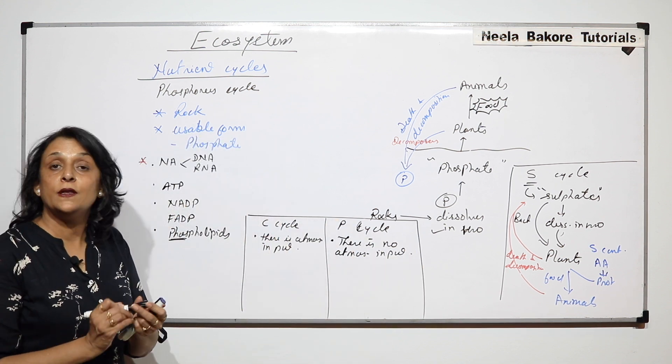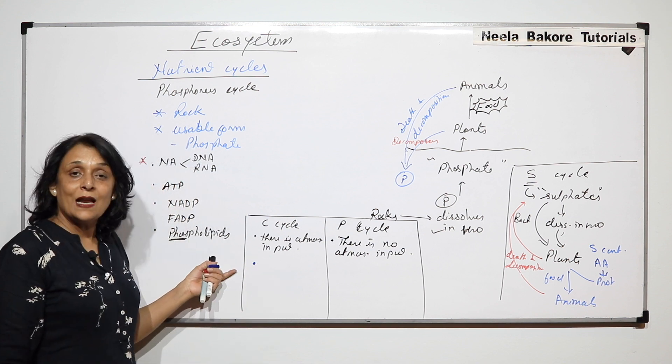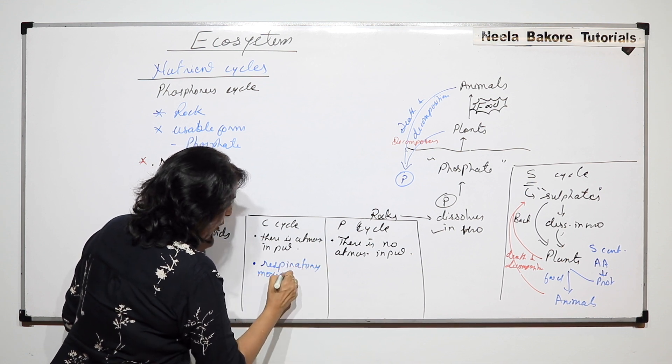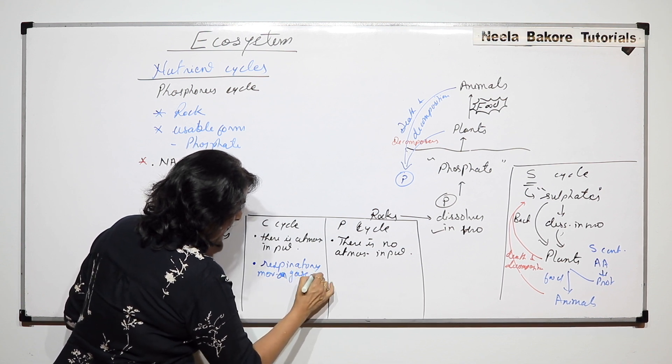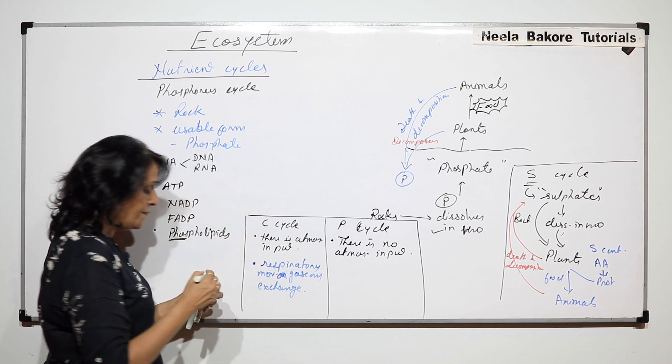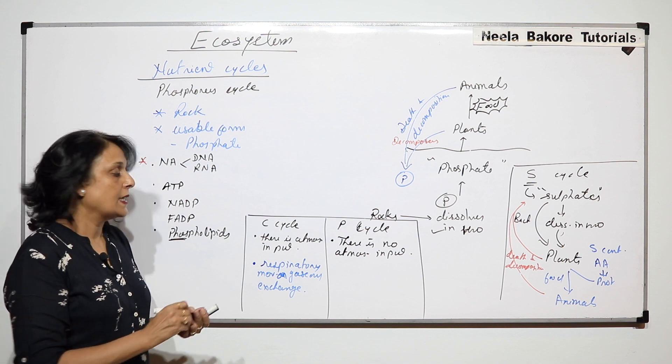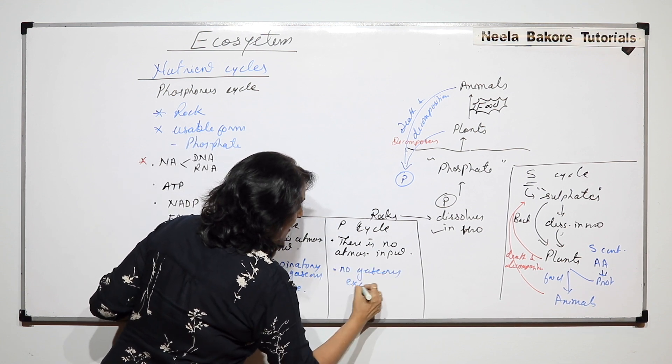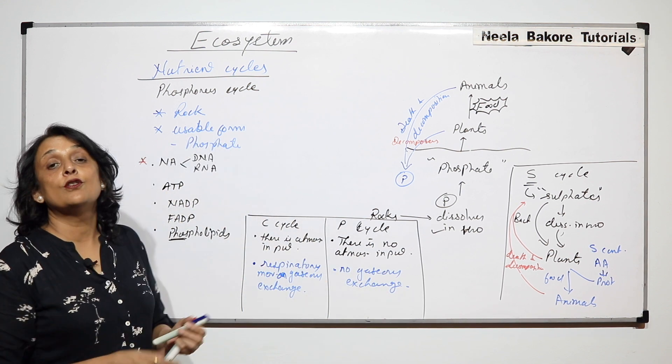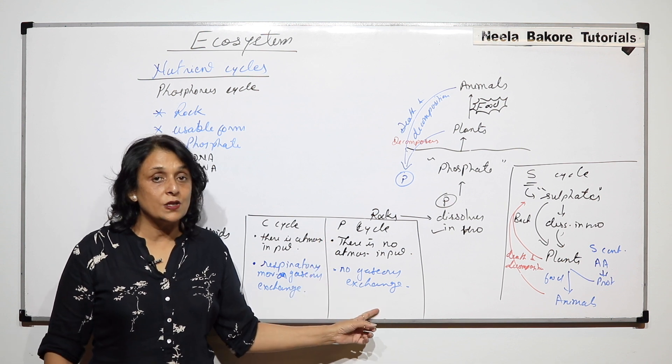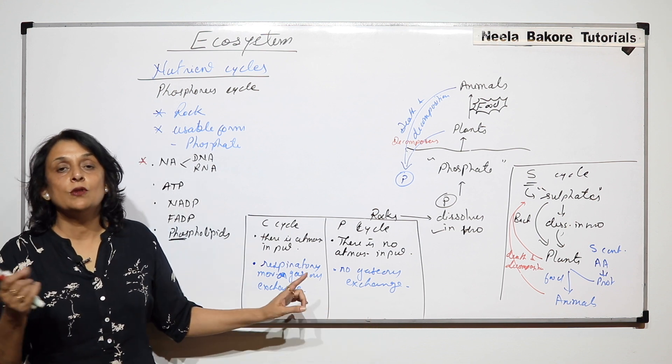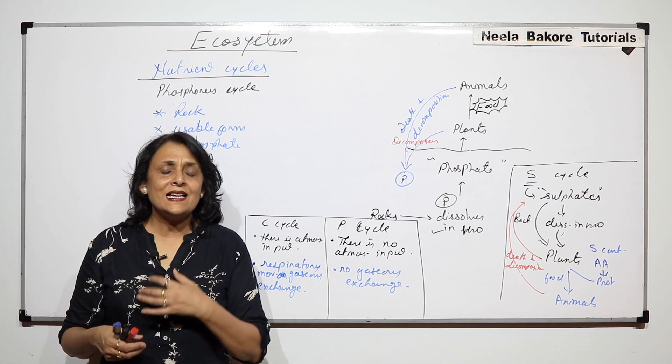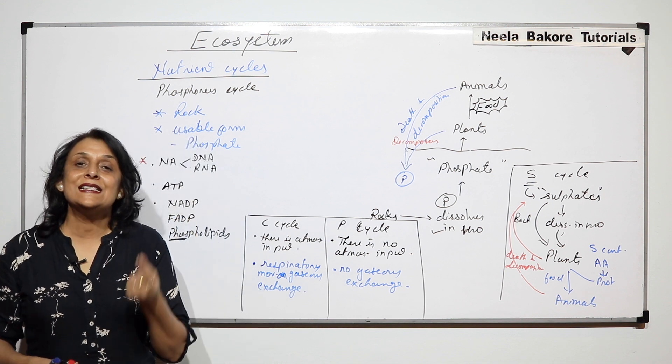The second difference is carbon cycle has respiratory movement or gaseous exchange of carbon in the form of carbon dioxide. In case of phosphorus there is no gaseous exchange. It is always in the form of a solution or phosphate dissolved in water. If it has to move from one organism to another, from plant to animal, it has to go in the form of some organic compound.